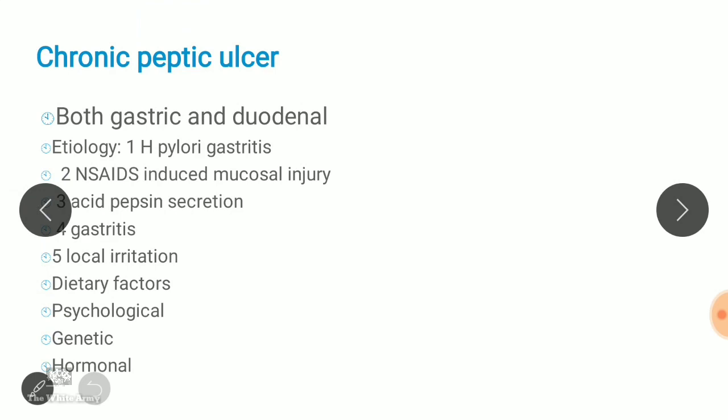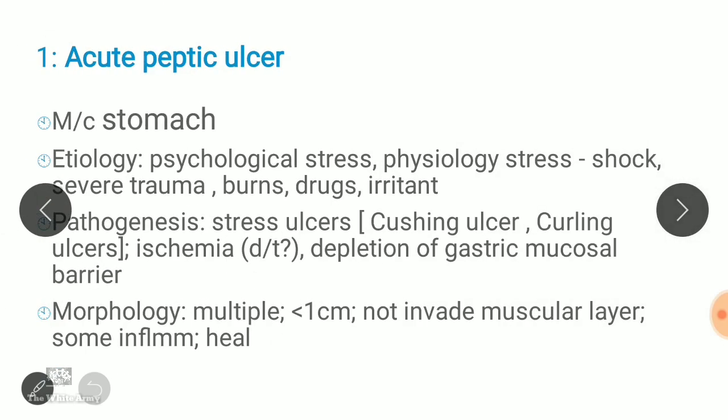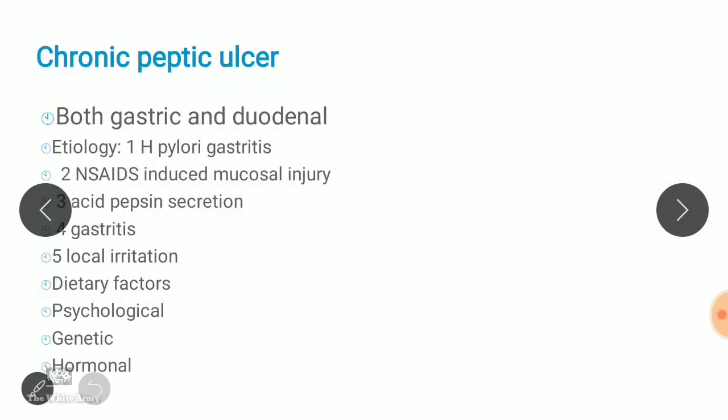Morphologically, acute peptic ulcers are multiple in number but less than 1 cm in size. They do not invade the muscular layer, there may be some inflammation, and they heal completely. Complications include hemorrhages and perforations. The second type — chronic peptic ulcer — involves both gastric and duodenal ulcers, and is frequent in middle-aged adults, more common in males. Duodenal ulcers are 4 times more common than gastric ulcers.